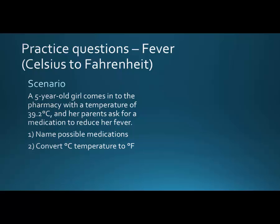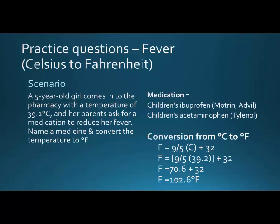Here's another fever question. A five-year-old girl comes into the pharmacy with a temperature of 39.2 Celsius. Parents ask for a medication to reduce her fever. We'd consider children's ibuprofen — brand names Motrin or Advil — and children's acetaminophen — brand name Tylenol. Notably absent is aspirin; children's aspirin is something we don't use anymore. You'll see low-dose aspirin for patients protecting against another heart attack, as it keeps platelets from getting sticky and causing a clot.